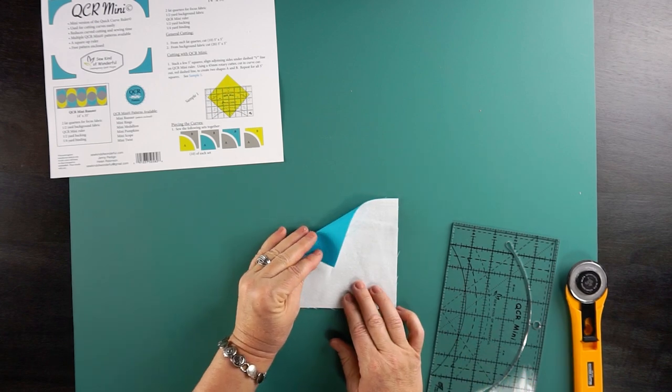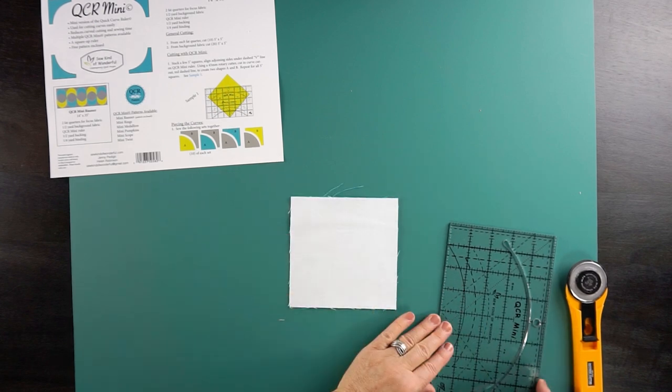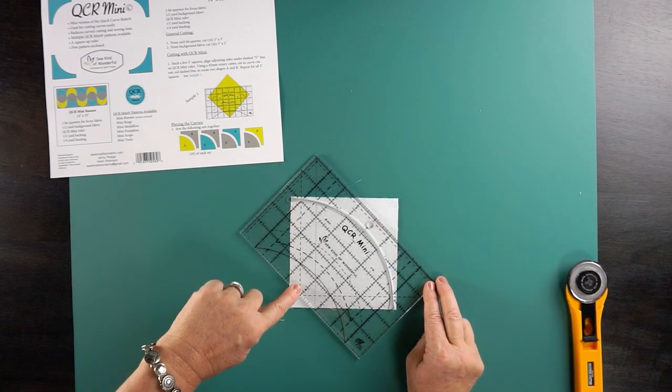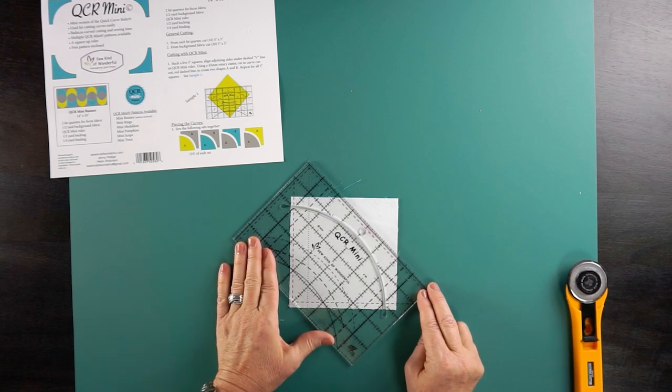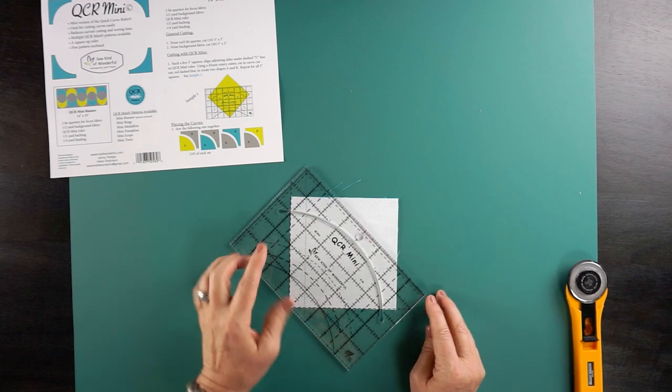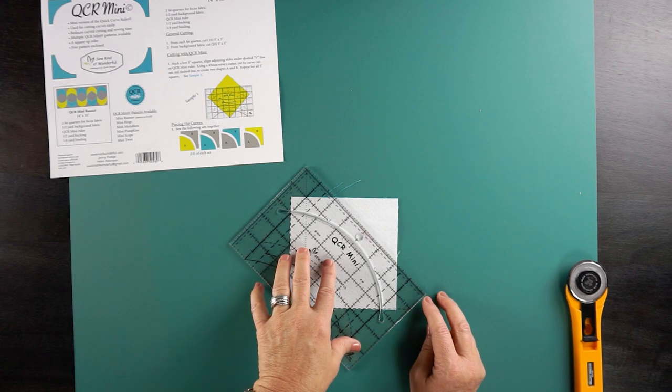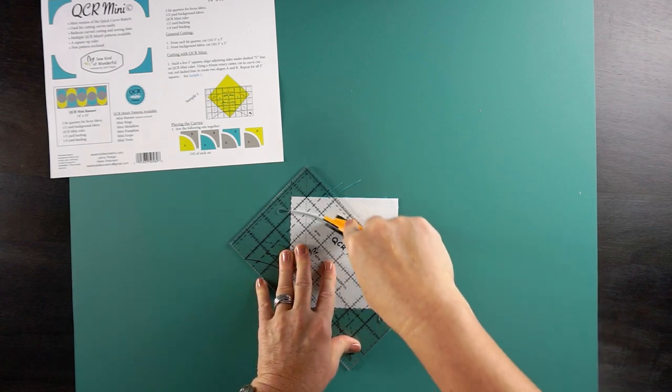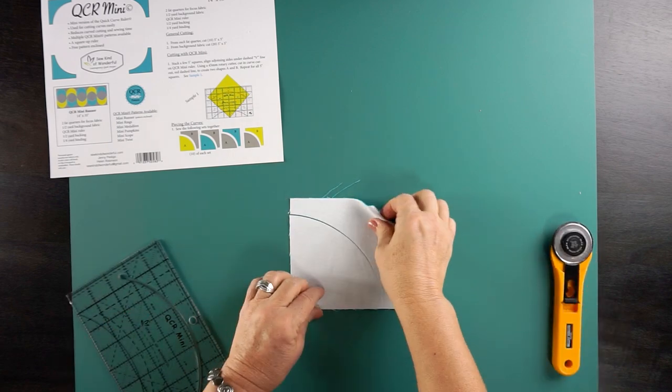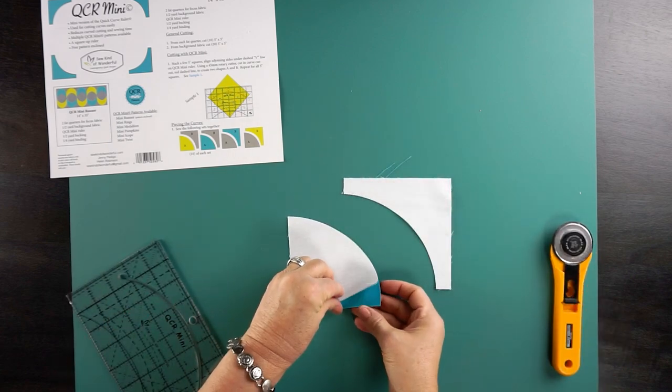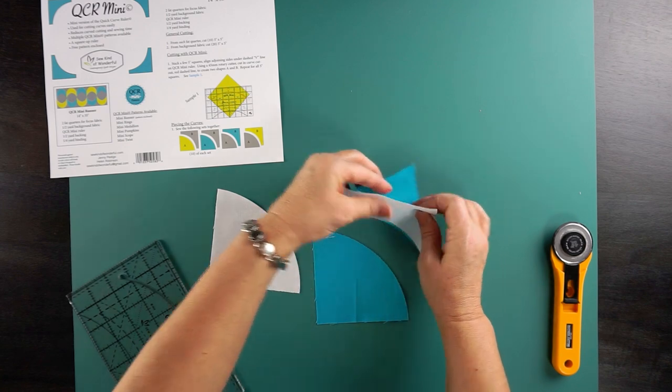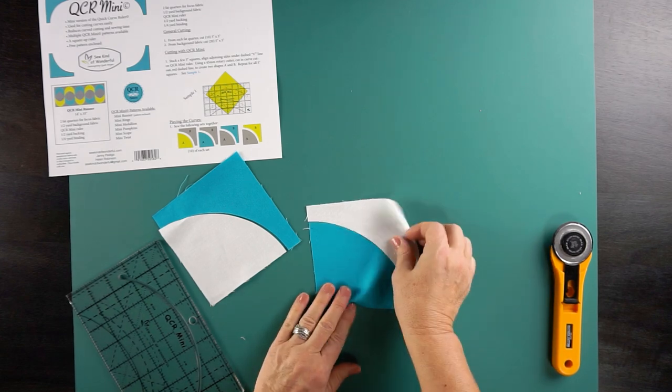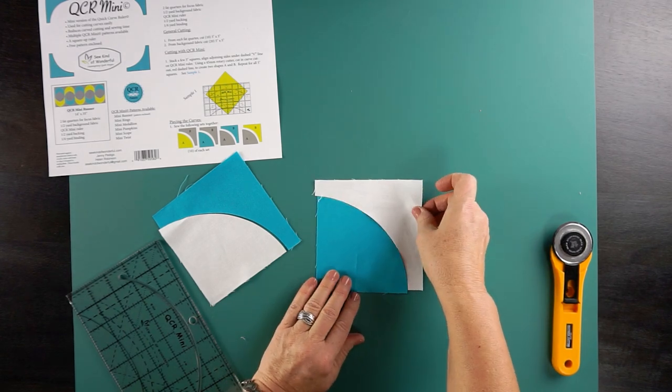First step: I layered two five inch squares. Now I'm going to see this dashed V on my ruler. I'm going to line that up on two sides of my stack of fabric there. Then I'm going to use my regular rotary cutter. I'm just cutting my curve cut out. That gives me two different shapes. I'm just going to alternate those fabrics. This is what we call our curved half square triangle.